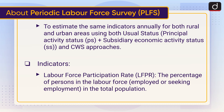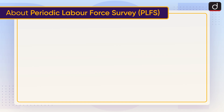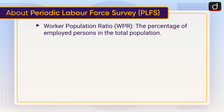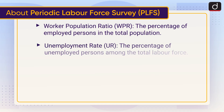Key indicators: Labour force participation rate is the percentage of persons in the labour force — employed or seeking employment — in the total population. Worker population ratio is the percentage of employed persons in the total population. Unemployment rate is the percentage of unemployed persons among the total labour force.